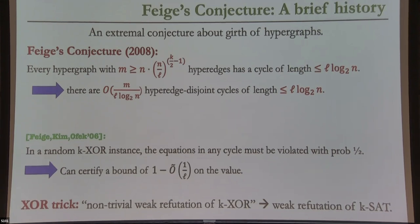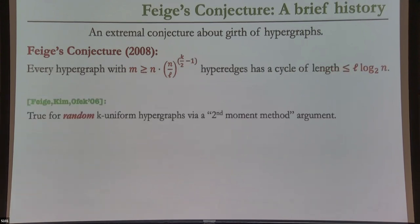This edge-disjoint cycle partition really helps because you can get a lower bound on the number of hyperedges that must be violated. You want to trade off this L correctly with some spectral refutation for lower-arity XOR systems. Correctly balancing these numbers gives you the N^{1.4} threshold — that's the idea of Feige–Kemanoff–Ofek. For random K-uniform hypergraphs it was a sophisticated argument; they proved not exactly a disjoint cycle partition but something almost disjoint that's still good enough.